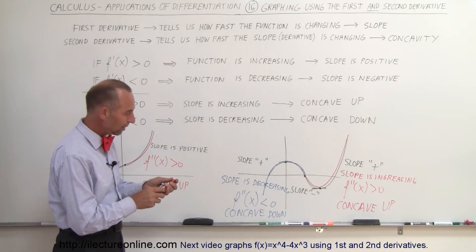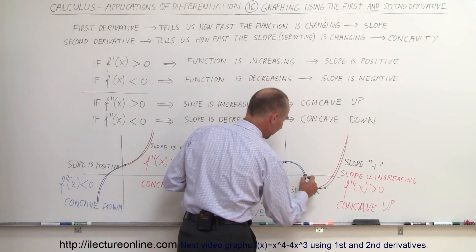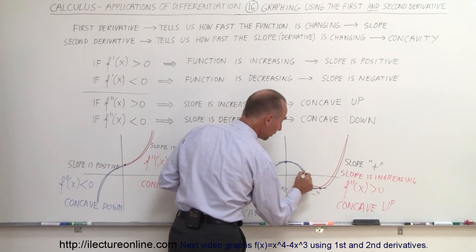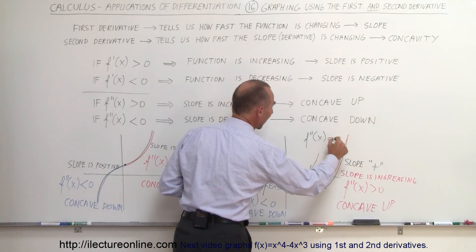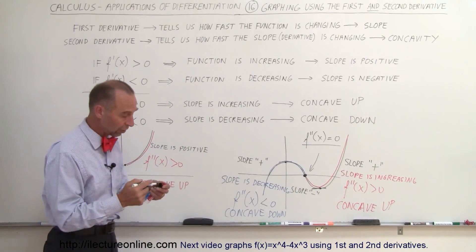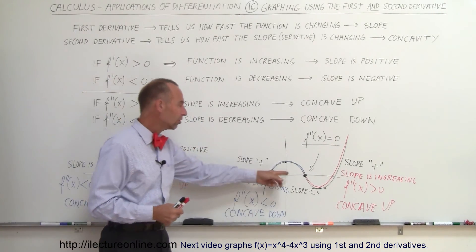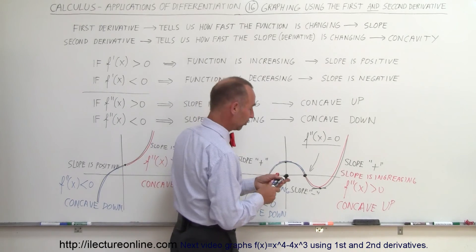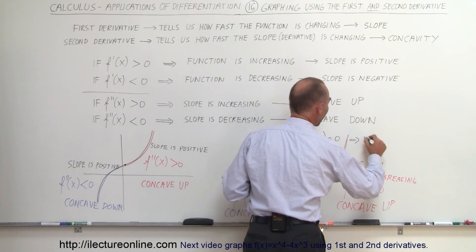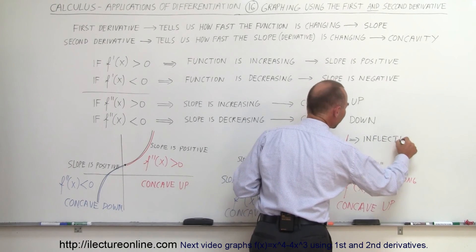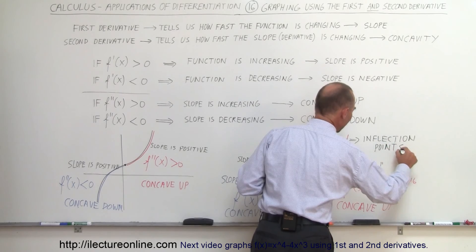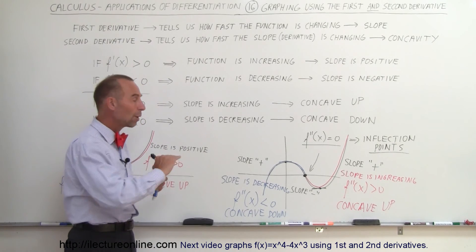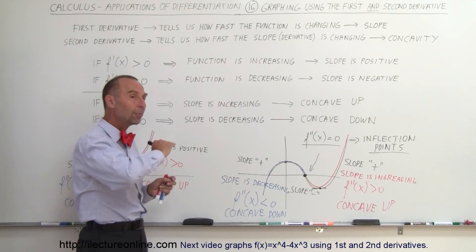What about the point right there that separates those two? If the second derivative here is negative and the second derivative here is positive, at that point f double prime of x has to be equal to zero. That's where the second derivative equals zero, and that's a very special critical point. We call this the inflection point. When the second derivative equals zero, this means we have an inflection point. An inflection point is a point where the second derivative is zero, where we go from concave down to concave up, or concave up to concave down.